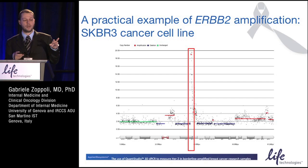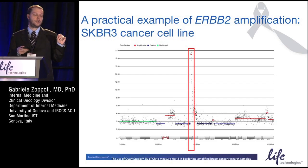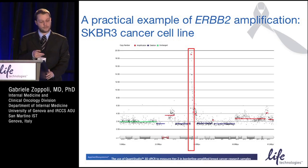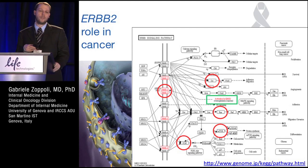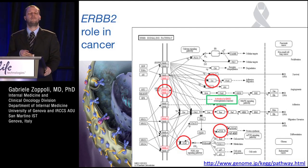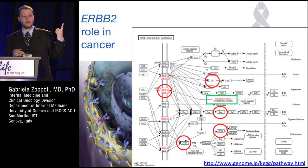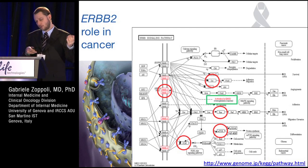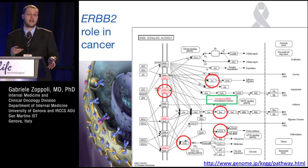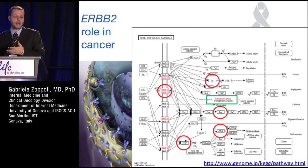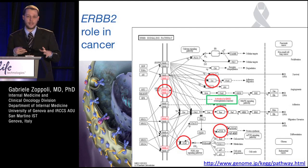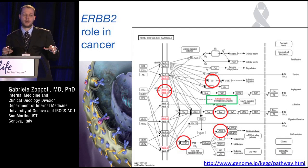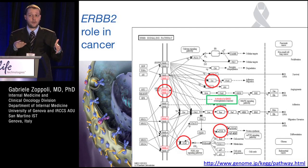Here's just an example by aCGH on a cell line we used as a positive control — it shows a high-level amplification of the ERBB2 locus. HER2 is focal in breast cancer and is part of the ERBB family of membrane tyrosine kinases. Upon amplification, HER2 is overexpressed, and protein overexpression is sufficient to drive breast cancer cell proliferation because HER2 homodimerizes or heterodimerizes with other members of the family and activates a plethora of downstream targets, which are themselves now targeted by targeted therapies.